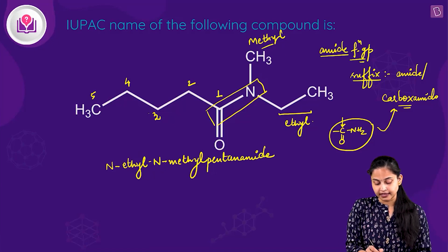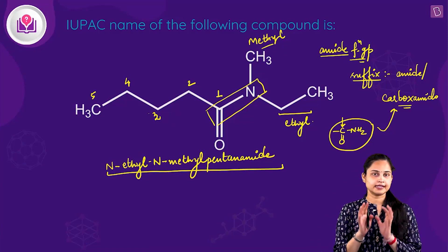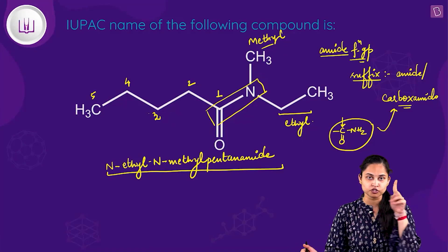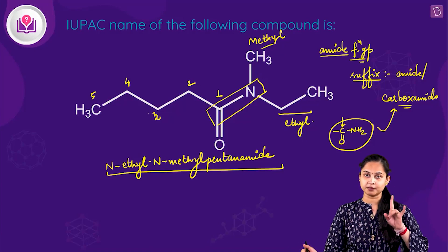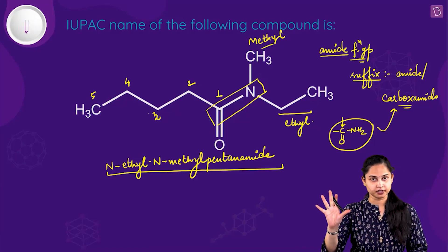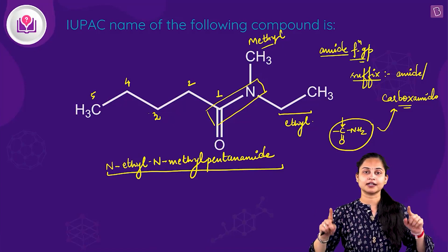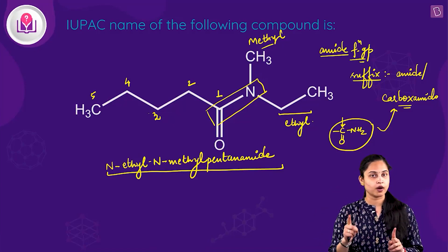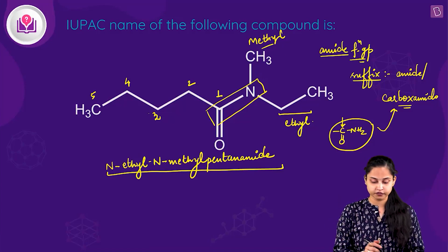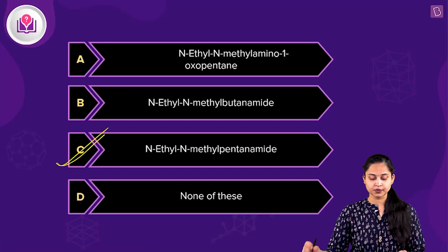To summarize: first, we identified the parent chain including the amide carbon — it has 5 carbons, giving 'pentanamide'. To the nitrogen, two substituents are attached: ethyl (named first alphabetically) and methyl. So the IUPAC name is N-ethyl-N-methyl-pentanamide. Option C is the correct answer.